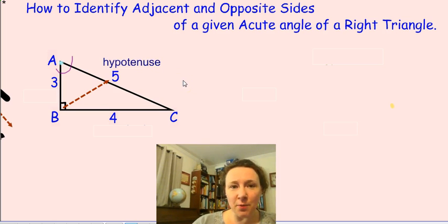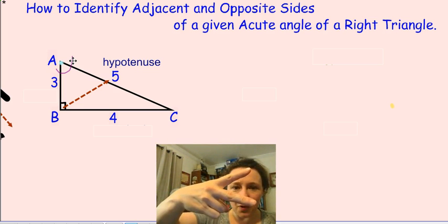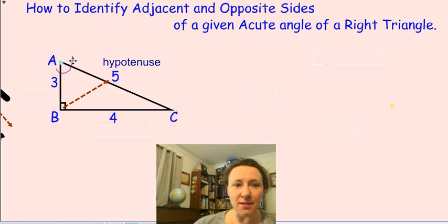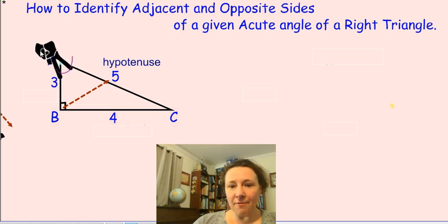Now imagine that we're labeling our triangle in reference to acute angle A. For that, we will have to put this curve on the angle, and I also will ask you to imagine that you put your two fingers right at its vertex, just like you see it's been done on your screen. I find it to be